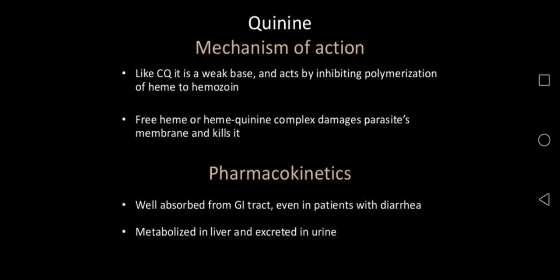Quinine, like chloroquine, is a weak base and it acts by inhibiting the polymerization of heme to hemozoin. Hemozoin is the substance that is utilized by the parasite. When hemozoin is not formed, accumulation of heme into that organism occurs, and this free heme or heme-quinine complex damages the parasite's membrane and kills it.